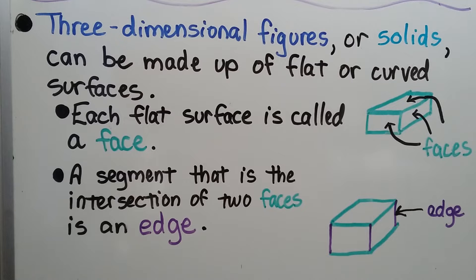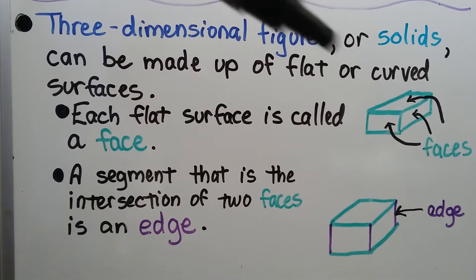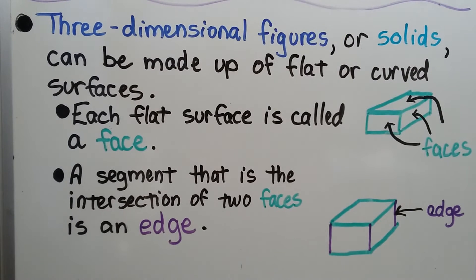Three-dimensional figures, or solids, can be made up of flat or curved surfaces, and each flat surface is called a face. So each of these flat surfaces are called a face, and a segment that is the intersection of two faces is an edge. You can see all our purple edges that are connecting the faces together.